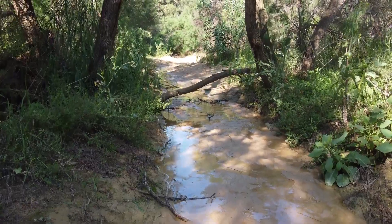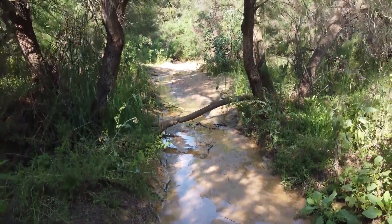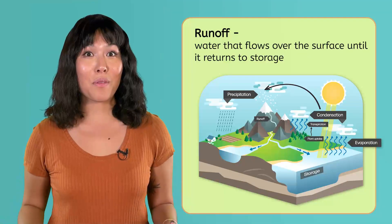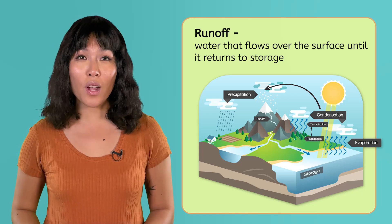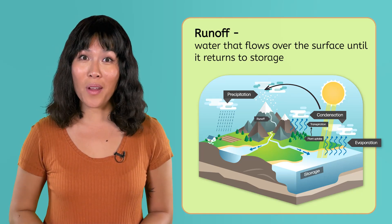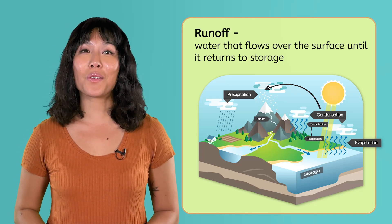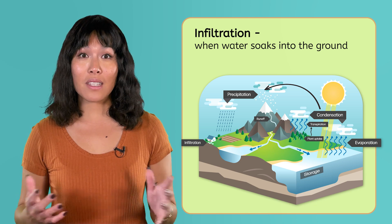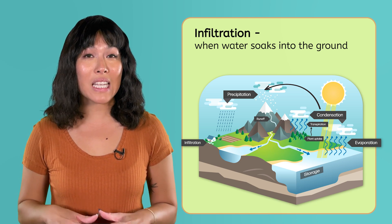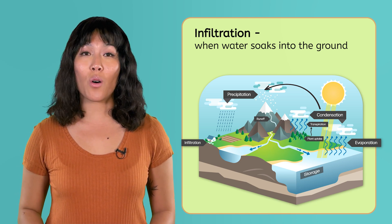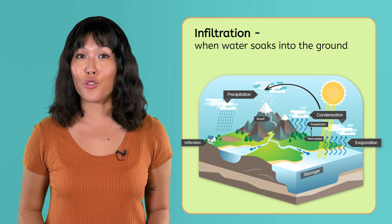But not all water that falls on the ground is taken up by plants. Some of it flows over the surface as runoff until it reaches a body of water, at which point it returns to storage. But some of the water on the surface soaks into the ground, which is called infiltration. Then Earth's gravity continues to pull the water deeper and deeper underground, in a process called percolation.